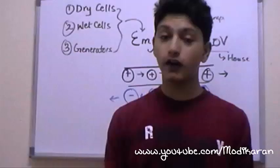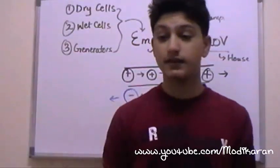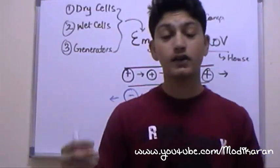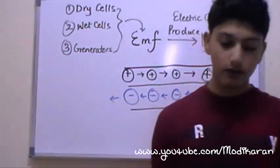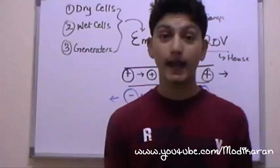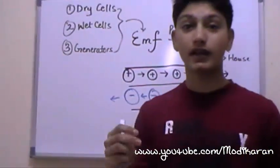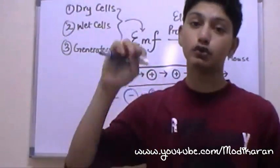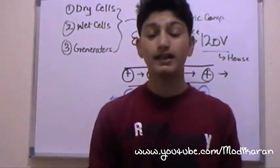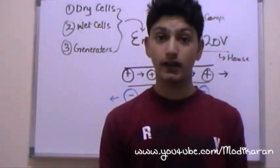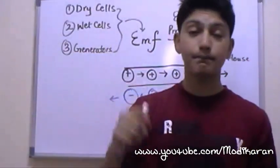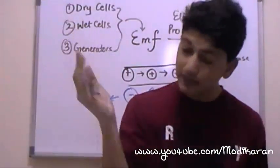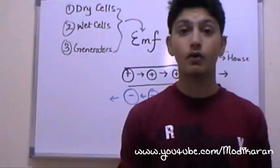Now let's talk about circuits. A circuit is basically a name given to a completed path along which electric charges flow from high voltage to low voltage. When you have voltage flowing from high to low through a complete path, that complete path is known as a circuit.